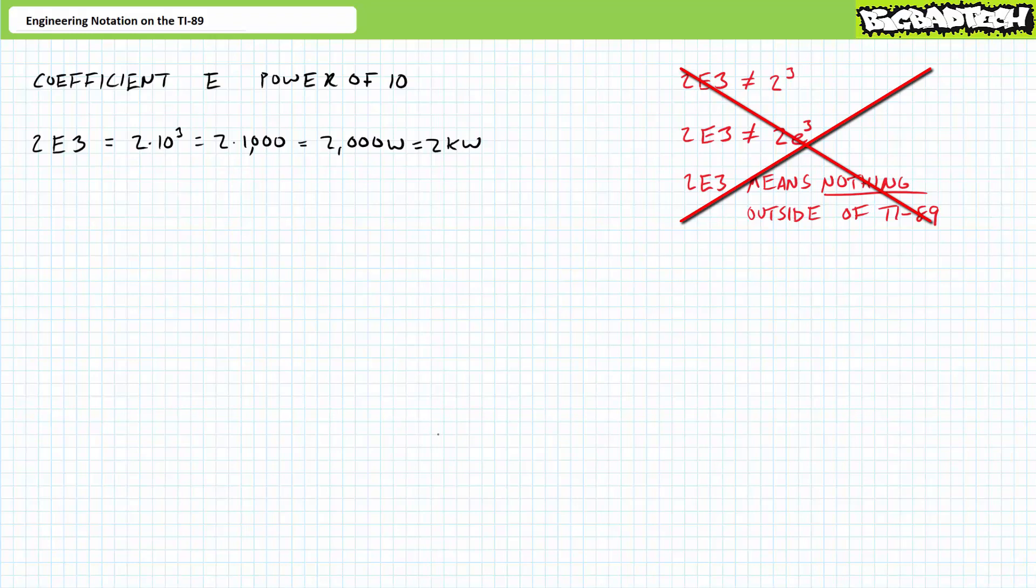There is one and only one proper interpretation. The TI-89 tells us the coefficient, in this case 2, tells us we're in engineering format with a capital E, and to what power of 10 we're multiplying the coefficient by. In this case, 10 to the third, or 1,000. We know the engineering prefix associated with 10 to the third, or 1,000, is a kilo, or a small k, so if this is a measure of power in units of watts, the calculator is saying 2 kilowatts. Can you dig?